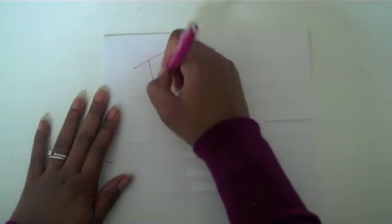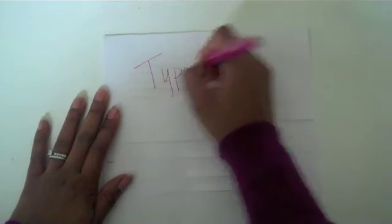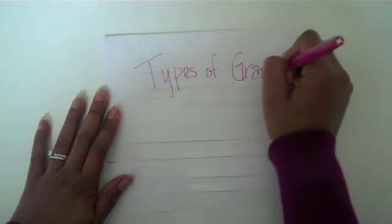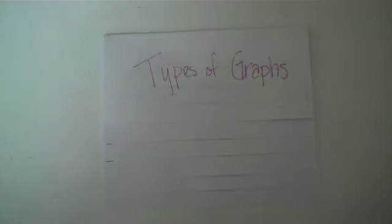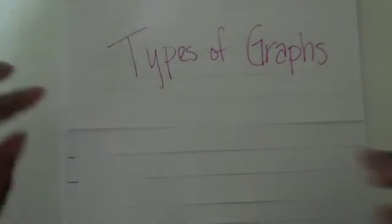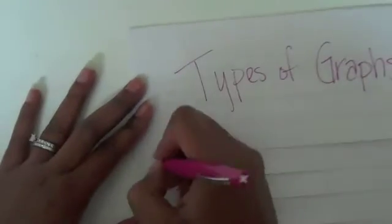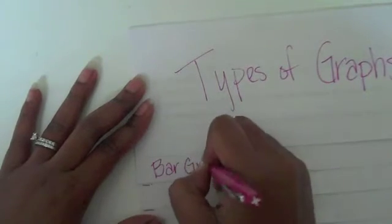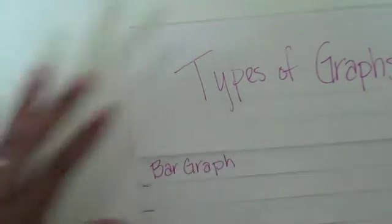The first thing you'll want to do is title your notes. The title we've got here is Types of Graphs. We're going to go through about five different types of graphs. So let's go ahead to the first one. The first type of graph is a bar graph, so make sure you label that tab and let's go ahead and take our notes on bar graphs.